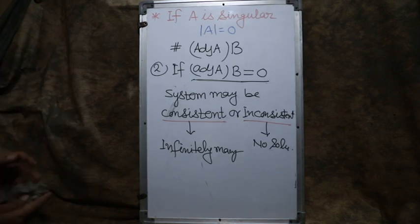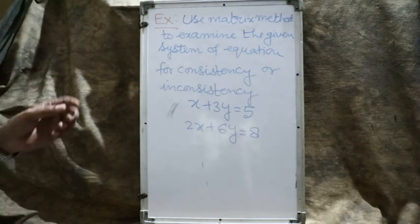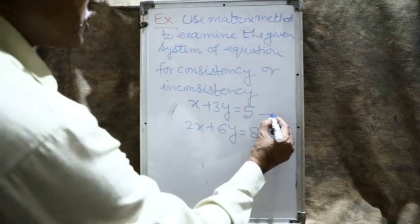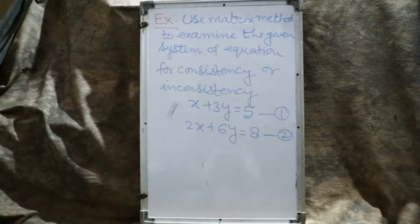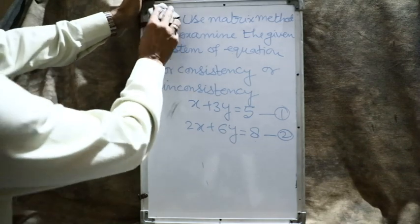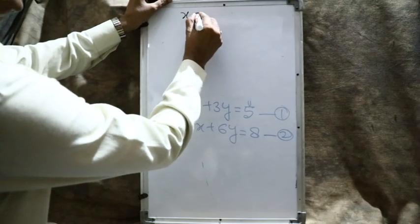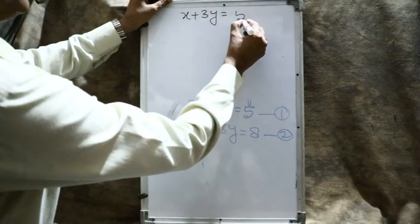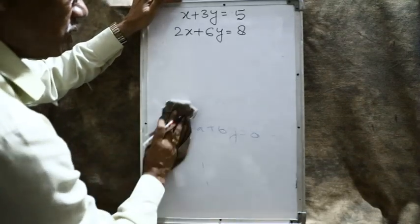Now the example: use the matrix method to examine whether the given system of equations is consistent or inconsistent. Two equations are given: x + 3y = 5 and 2x + 6y = 8. From class 10th it is clear that this will not have a solution, but here we will use the matrix method to find whether it is consistent or inconsistent.